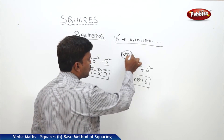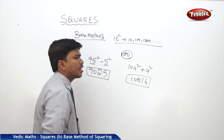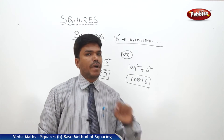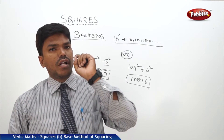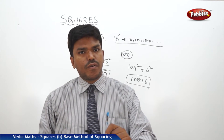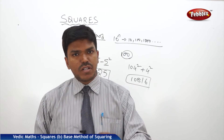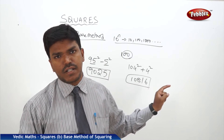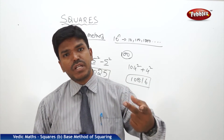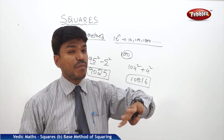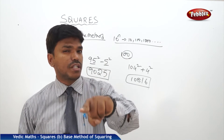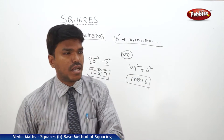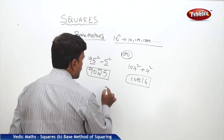Remember: the base we are taking is 100, which has 2 zeros. That means the right side part of the answer should be only 2 digits, because there are 2 zeros in base 100. If you are taking base 1000, there are 3 zeros, so the right side part should consist of exactly 3 digits — not more, not less.